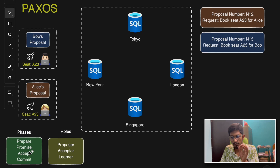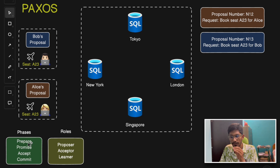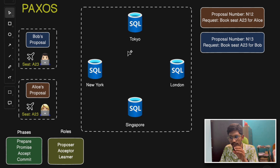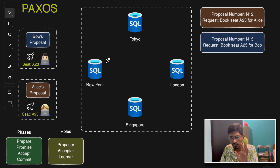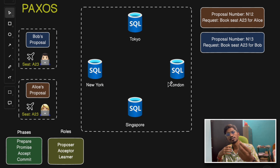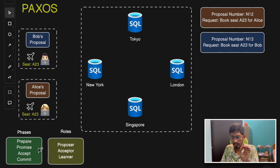In the prepare phase, whoever is the proposer sends a prepare request with a unique proposal number — some kind of unique identifier — to the other nodes. In the promise phase, all other acceptor nodes promise that they are ready to accept the proposal and won't accept any proposal with a lower proposal number than the incoming proposal.